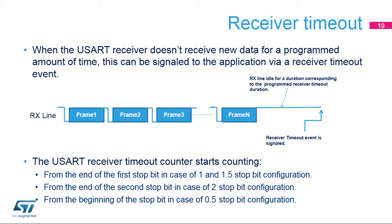The USART supports a receiver timeout feature. When the USART doesn't receive new data for a programmed amount of time, a receiver timeout event is signaled and an interrupt is generated if enabled. The receiver timeout counter starts counting from the end of the first stop bit in the case of 1 and 1.5 stop bit configuration, from the end of the second stop bit in the case of 2 stop bit configuration, and from the beginning of the stop bit in case of 0.5 stop bit configuration.